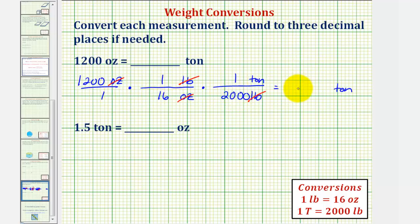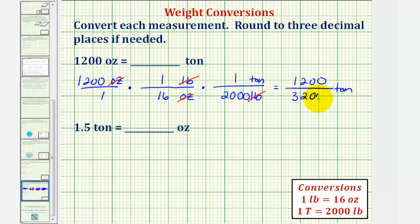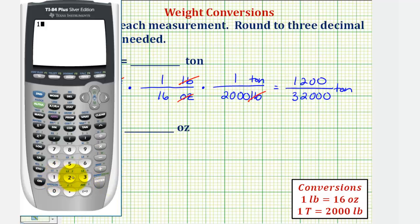Now we'll find the product of our fractions. Looking at the numerator, we have 1,200 times 1 times 1, so we have 1,200. In our denominator, we have 1 times 16 times 2,000, which equals 32,000. Now we'll find this quotient — and if needed, round to three decimal places. So we have 1,200 divided by 32,000.